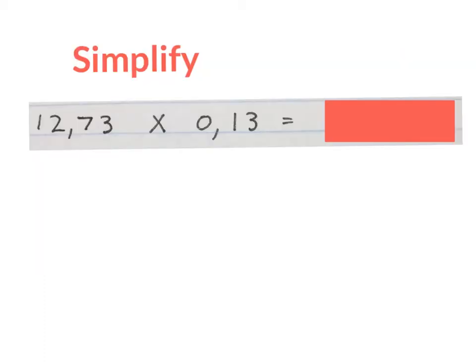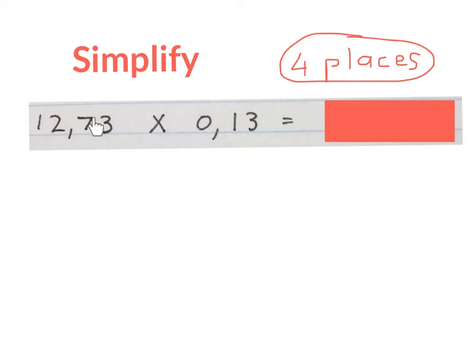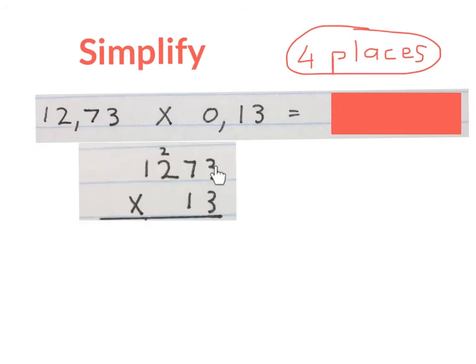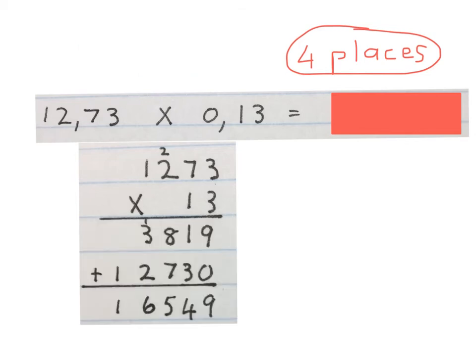Let's now see if you can do a proper decimal fraction multiplication sum. It says simplify 12,73 times 0,13. Firstly, we count the places behind the commas — there are two places behind 12,73 and another two behind 0,13, that is four in total. We write four places and circle it. Then you take out the commas and do a normal long multiplication sum. You times the 3 with that whole number and you times the 10 with that whole number, giving you two numbers which you then add for the final answer.